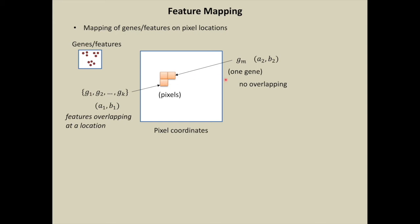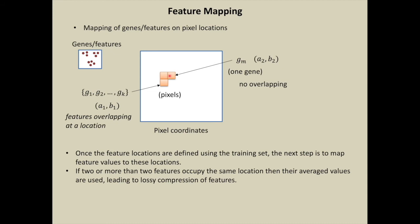On the other hand, if only one gene is pointing to a location a2, b2, then there will be no overlapping at this location. Once the locations are defined for all the d features using training set, the next step is to map feature values to these locations. If two or more features occupy the same location, their average values are used, leading to lossy compression of features.